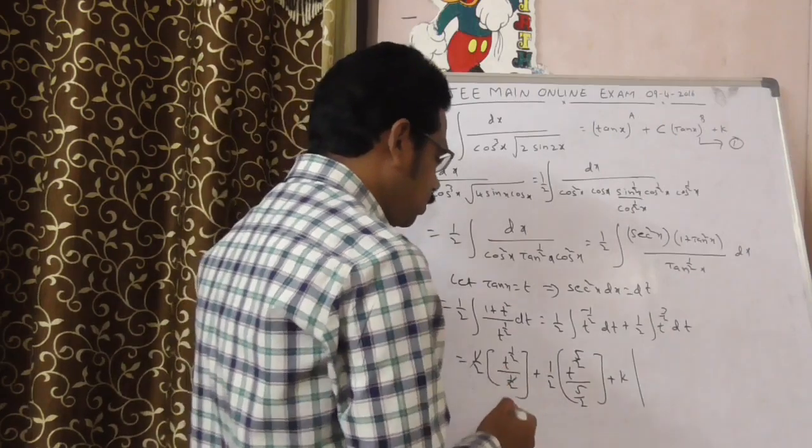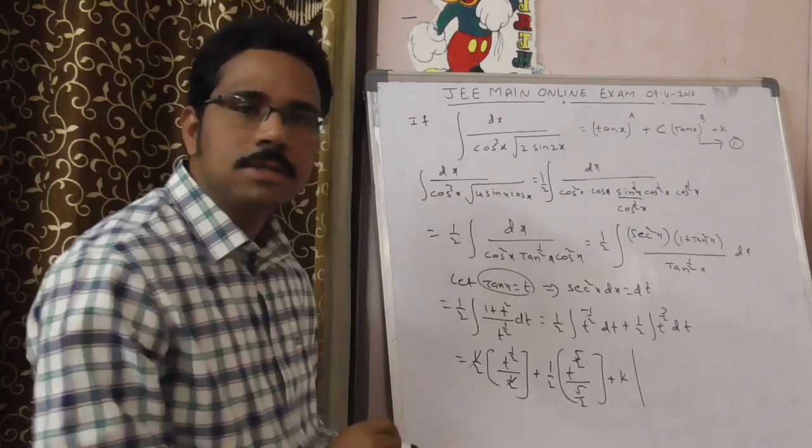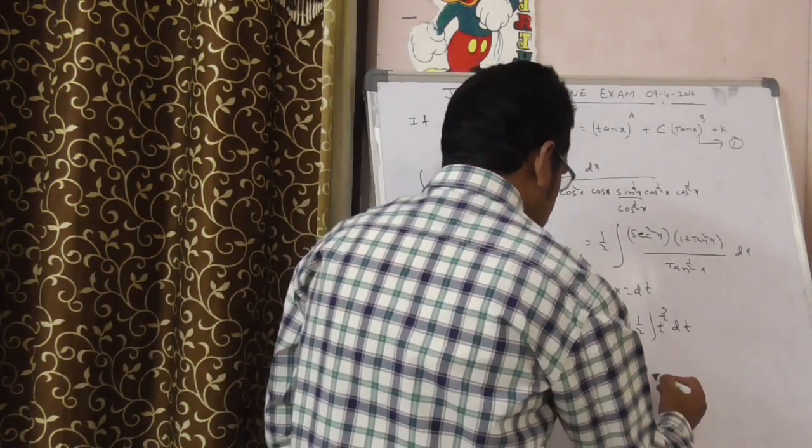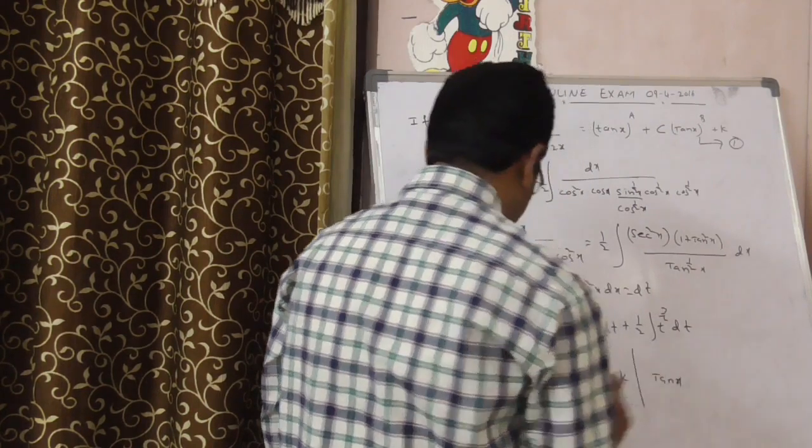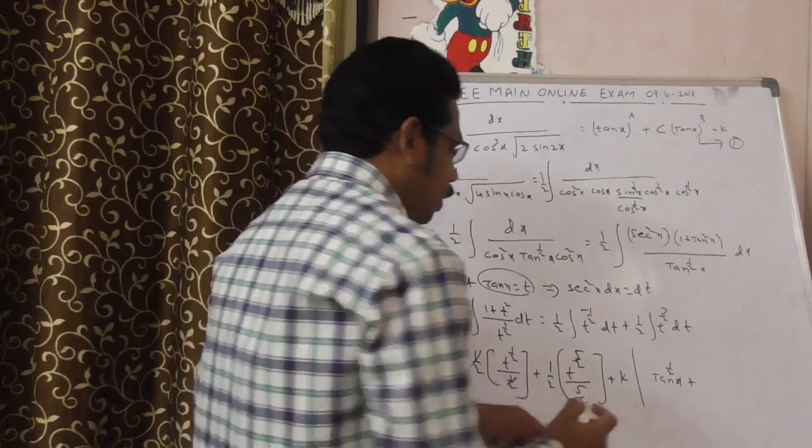Now, this 1 by 2, 1 by 2 gets cancelled. Now convert t into tan. Why? Because our assumption is what? Tan x is equal to t.